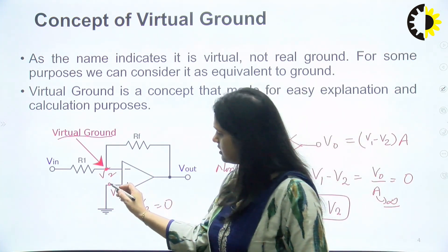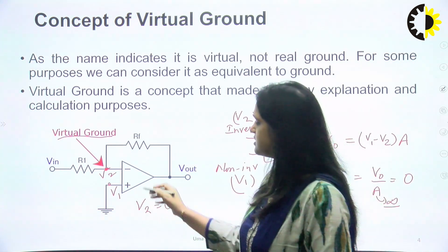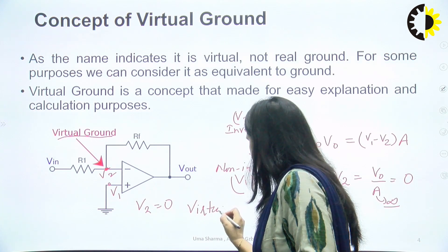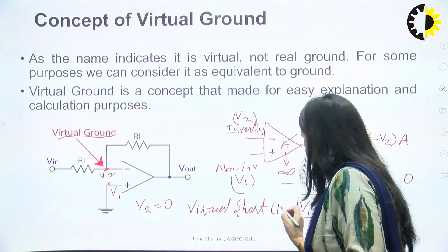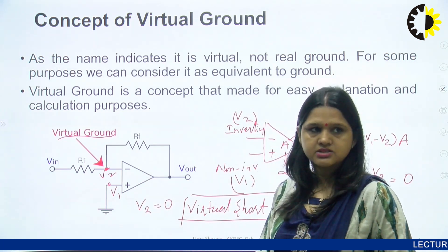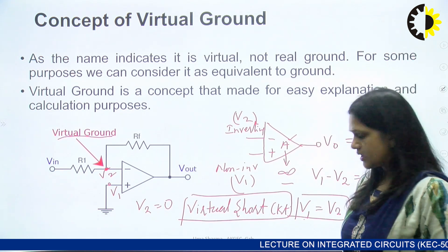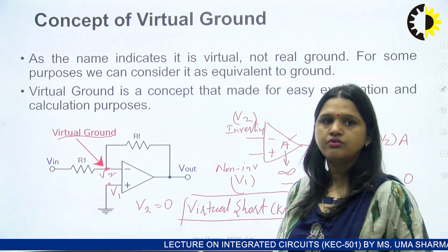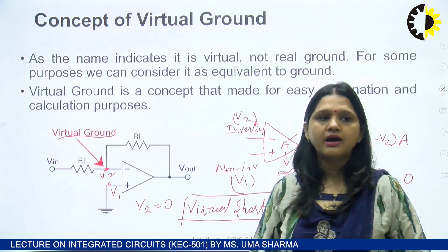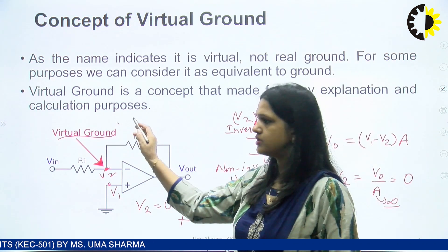For example, if there is some voltage connected at the non-inverting node, meaning V1 has some fixed value, then V2 will equal that same value. This concept is known as virtual short circuit. When the non-inverting node is at ground potential, it is called virtual ground. When the non-inverting node is at some finite value, it is called virtual short circuit. This concept is very useful in every application of Op-Amp.